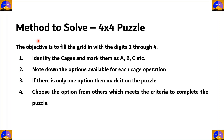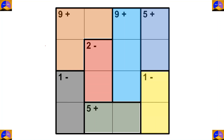This is our method to solve a 4x4 puzzle. The objective is to fill the grid in with the digits 1 through 4. First, we will identify the cages and mark them as A, B, C. Then, we will note down the options available for each cage operation. If there is only one option, then we will mark it on the puzzle. Then, we choose the option from others which meets the criteria to complete the puzzle. So, let's do a 4x4 puzzle.